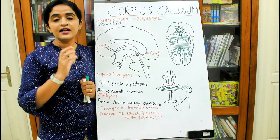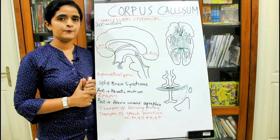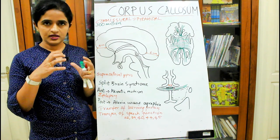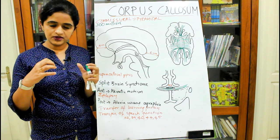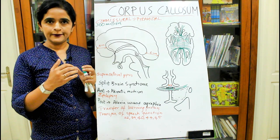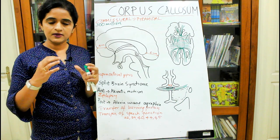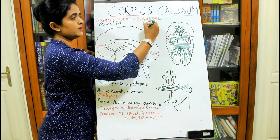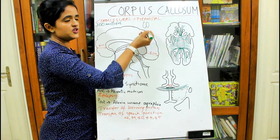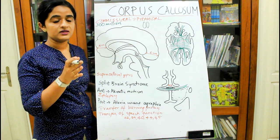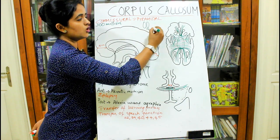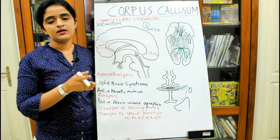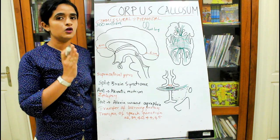The lateral ventricle has four main parts: the anterior horn, a body, a posterior horn, and an inferior horn. The anterior horn is in the frontal lobe, the body is in the parietal lobe, the posterior horn is in the occipital lobe, and the inferior horn is in the temporal lobe. Now, when you try to separate the two cerebral hemispheres, you can see a longitudinal fissure in the middle — that is known as the median longitudinal fissure.